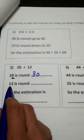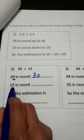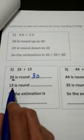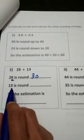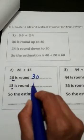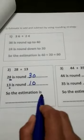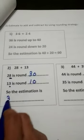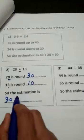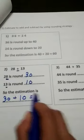For 13, the ones digit is 3, which is weak, so I go back to the 10 before. 13 rounds to 10. My estimation is 30 plus 10, which equals 40.